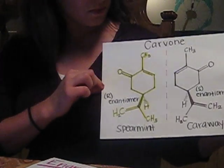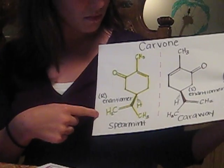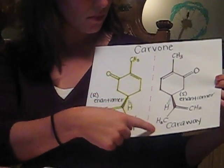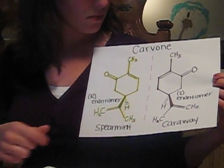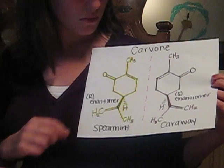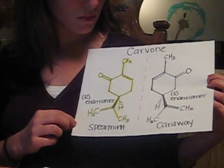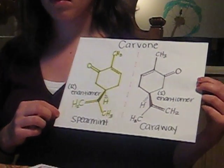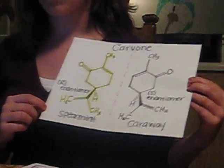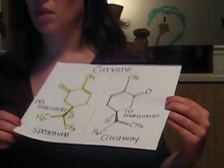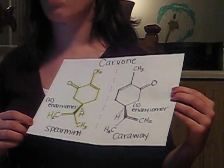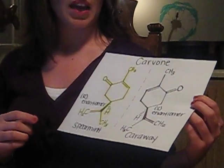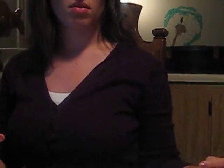The R-enantiomer is spearmint and the S-enantiomer is caraway, which is used to make rye bread. The separate enantiomers bind to different receptors in your mouth, making you taste different tastes. So my gum was made with the wrong enantiomer? Exactly!